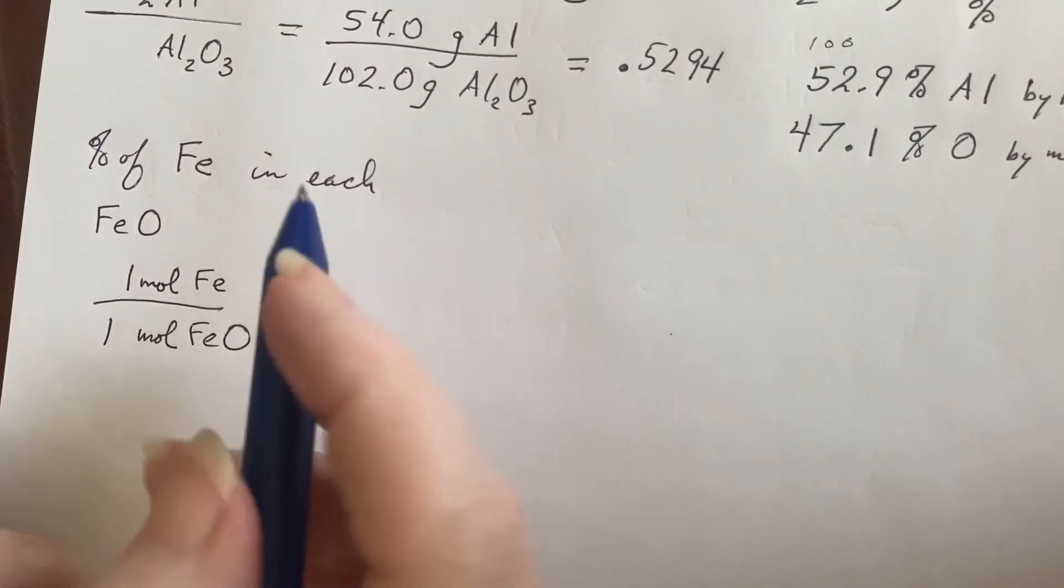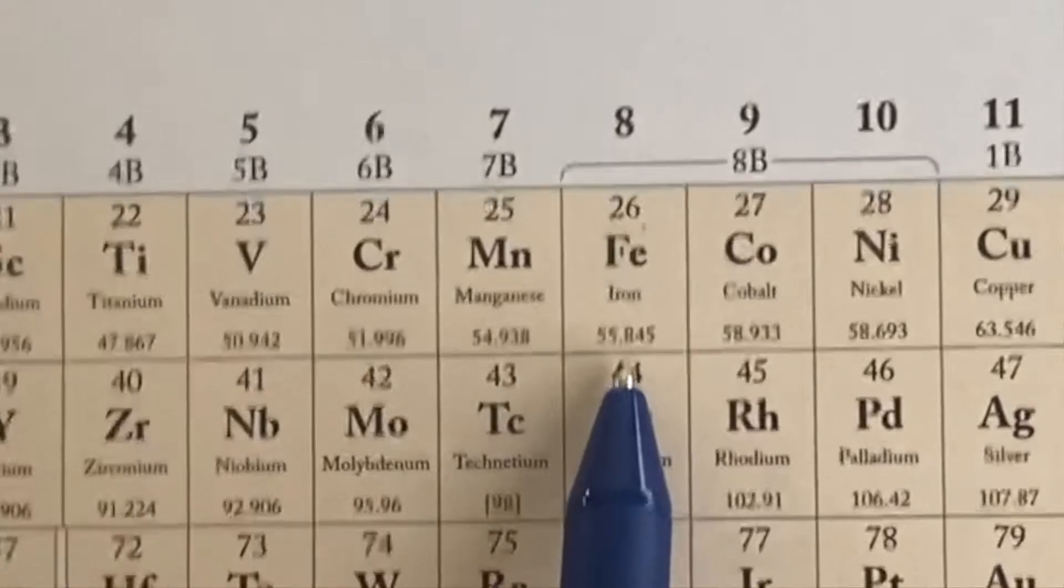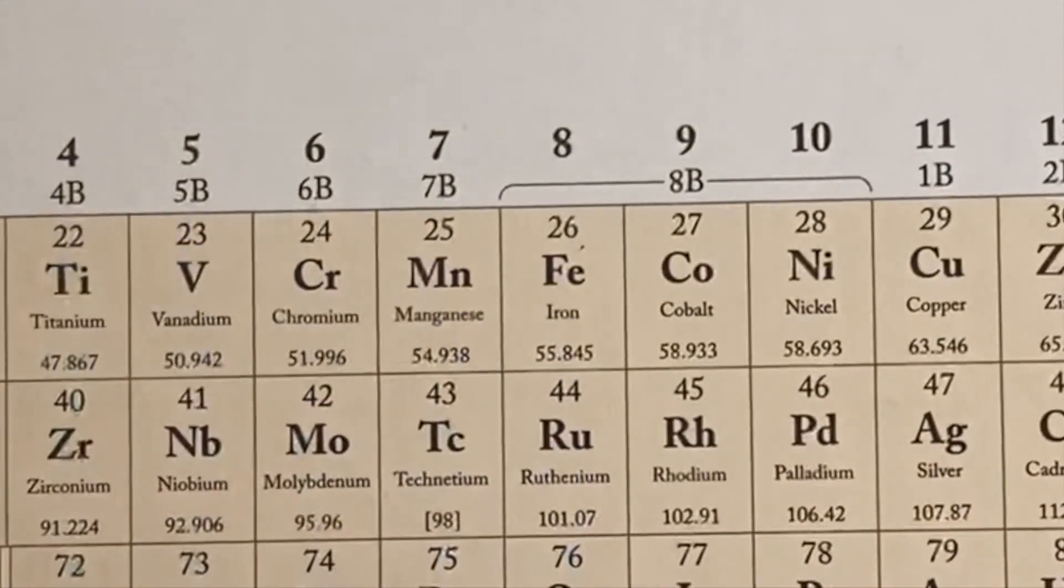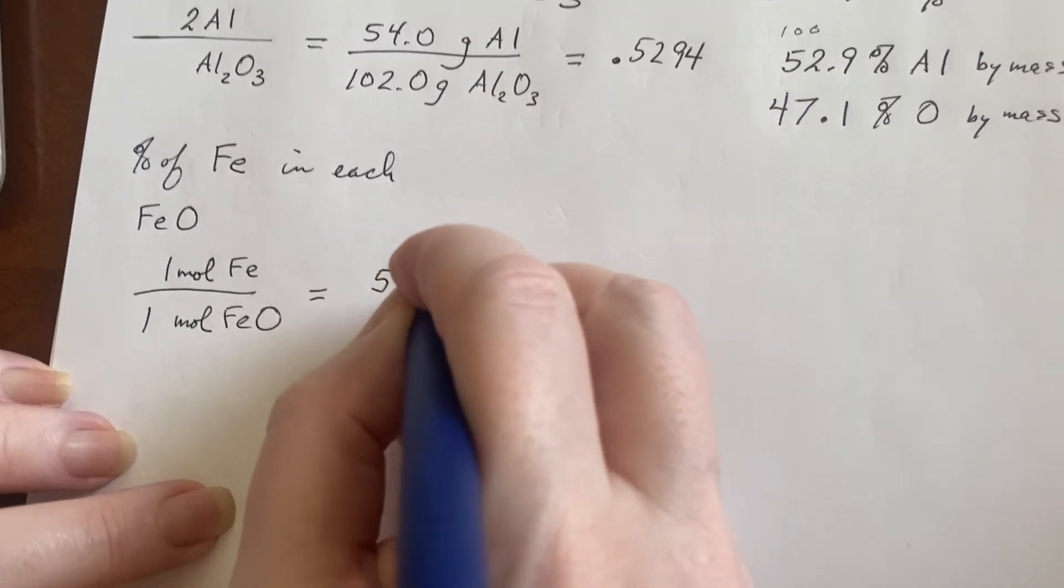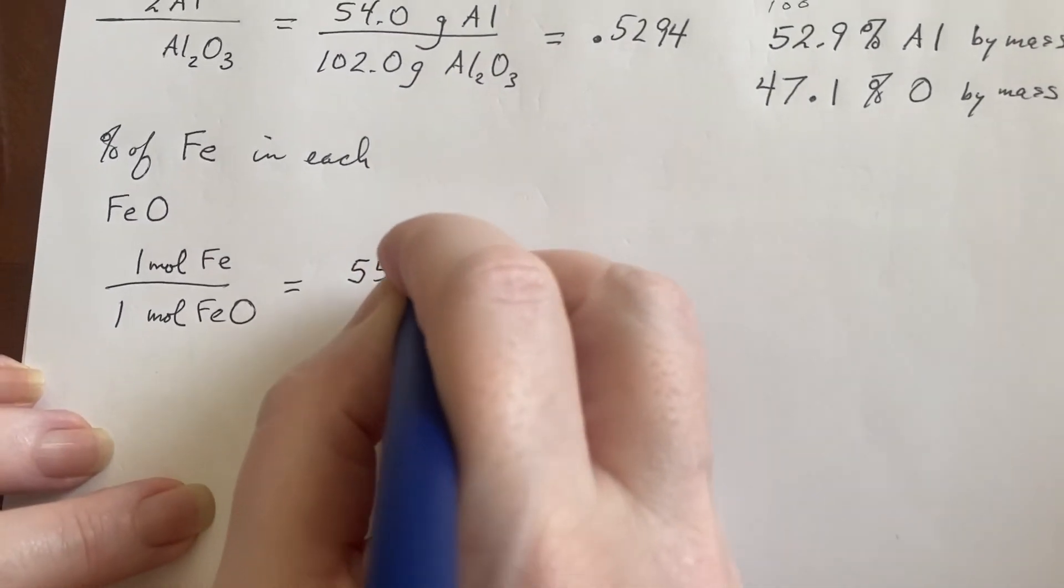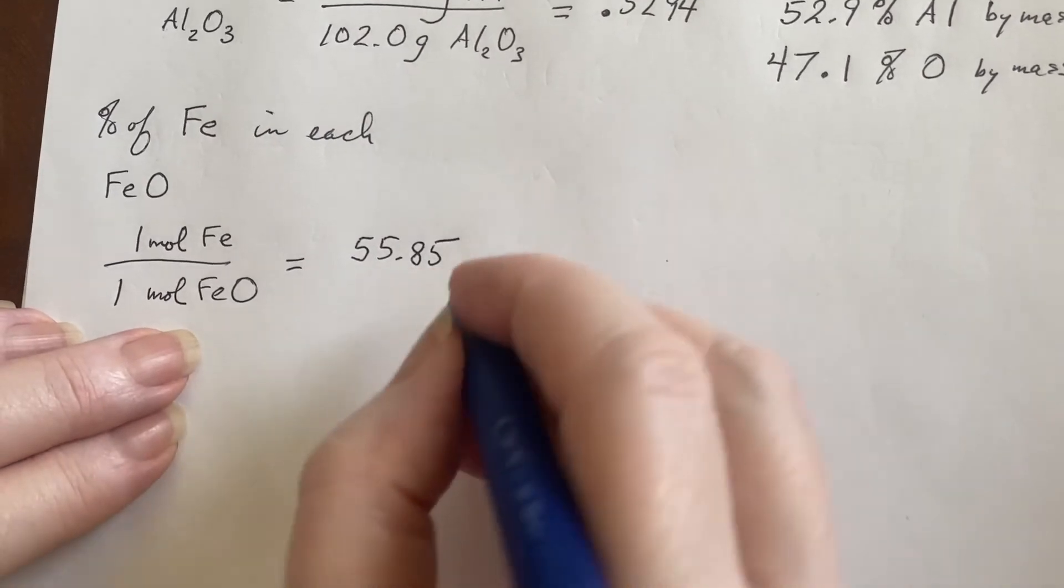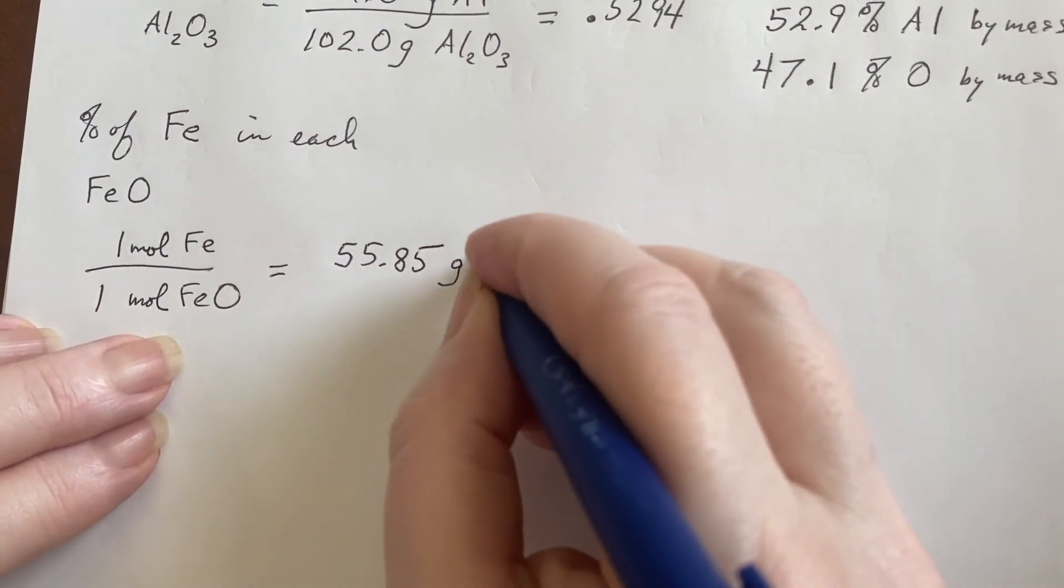So I have to go and look it up. 55.845. I'm going to make it a little easier on myself and just round that to 55.85. That would be the grams of iron.